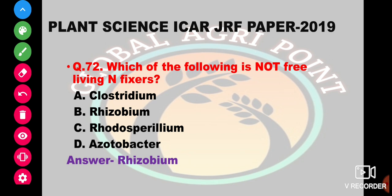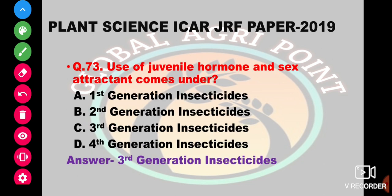Which of the following is not a free-living nitrogen fixer? The options are Clostridium, Rhizobium, Rhodospirillum, or Azotobacter. Rhizobium shows a symbiotic association rather than free-living. So the answer is Rhizobium.